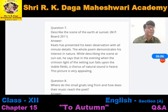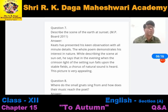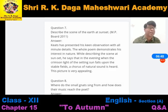Describe the scene of the earth at sunset. The poet says that in the evening when the crimson light of the setting sun falls upon the stubble field — when the sun falls upon the sky in twilight — a chorus of natural sounds is heard. The picture is very appealing.